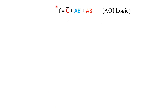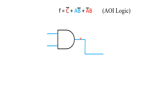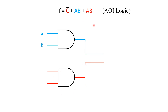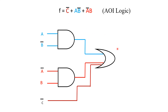To implement this expression using AOI logic: since F = C̄ + AB̄ + ĀB, we need two AND gates — the first for input AB̄ and the second for input ĀB — plus C̄ as a direct input. All three are given to an OR gate to produce the output F = C̄ + AB̄ + ĀB. This is the AOI logic implementation.